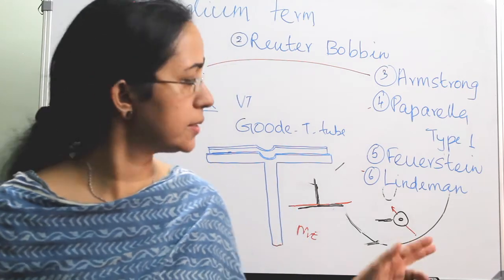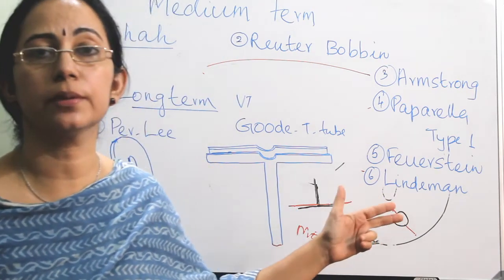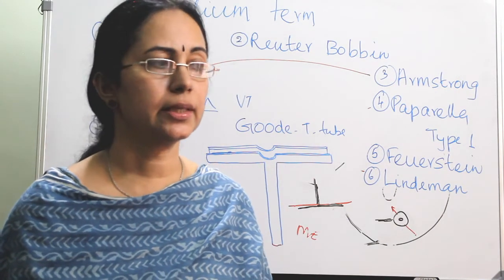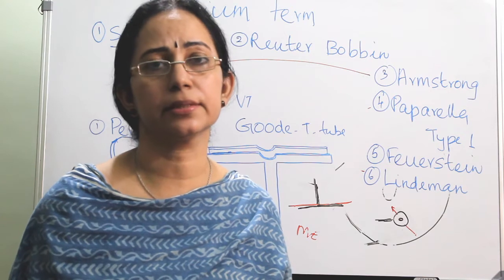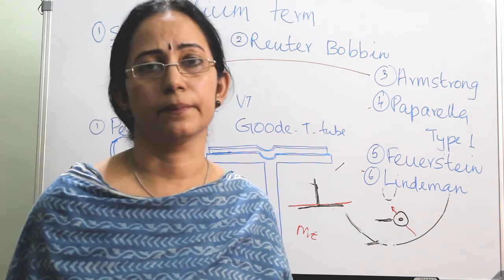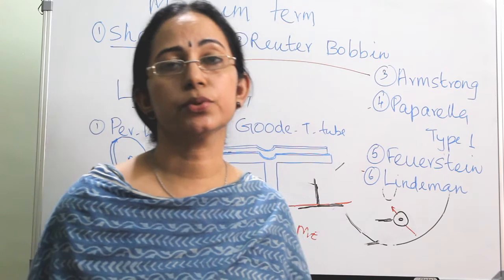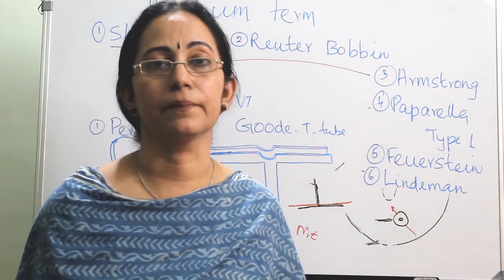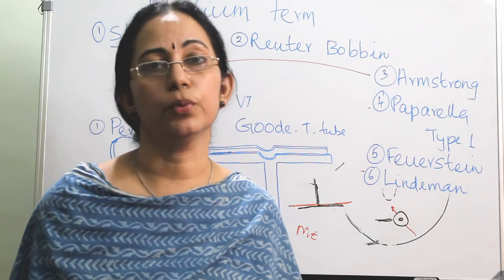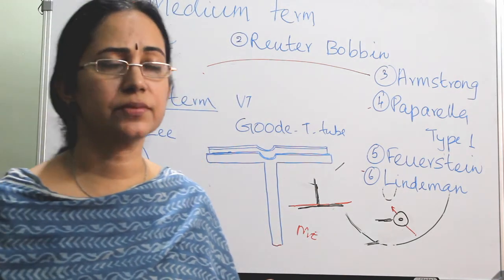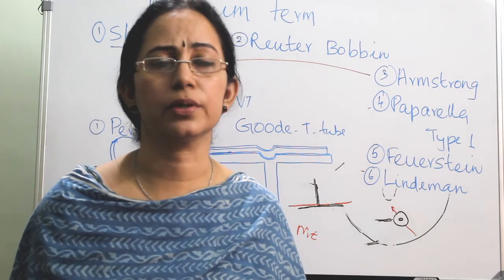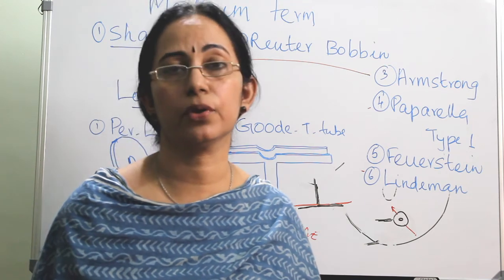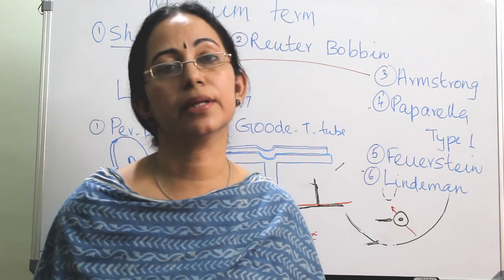Some problems can also happen when introducing the ventilation tube. One is accidental slippage of the tube into the middle ear through the myringotomy site. In that case, if you can see it you can remove it. Otherwise, if it has gone into the mesotympanum or hypotympanum and you cannot see it, there is no need to remove it because it is made of inert material such as Teflon, so leave it and ask the patient to come for regular follow-up.